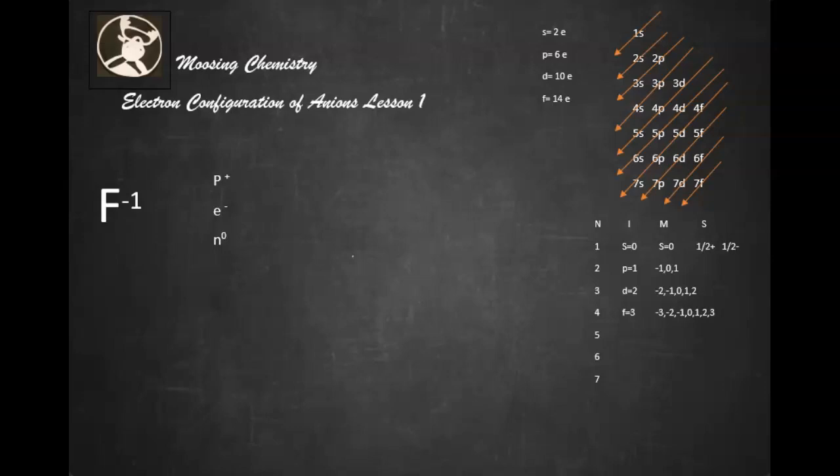When we talk about anions, we're talking about adding a charge to the neutral atom. So you see there, there's a negative one charge.